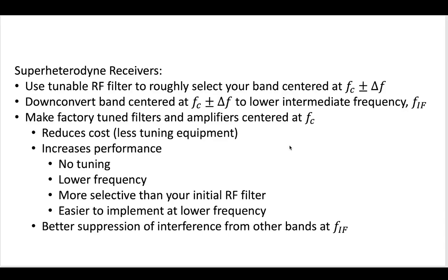So this whole process overall is called the super heterodyne receiver process. You use a tunable filter to roughly select your band. You might have a little bit of channel interference when you do that. You down convert into the low frequency. Then you make factory-tuned filters and amplifiers.